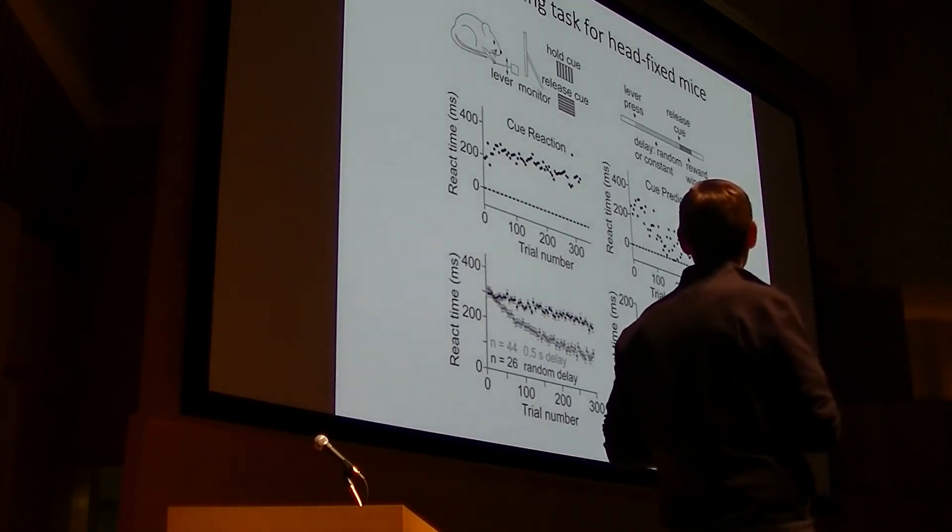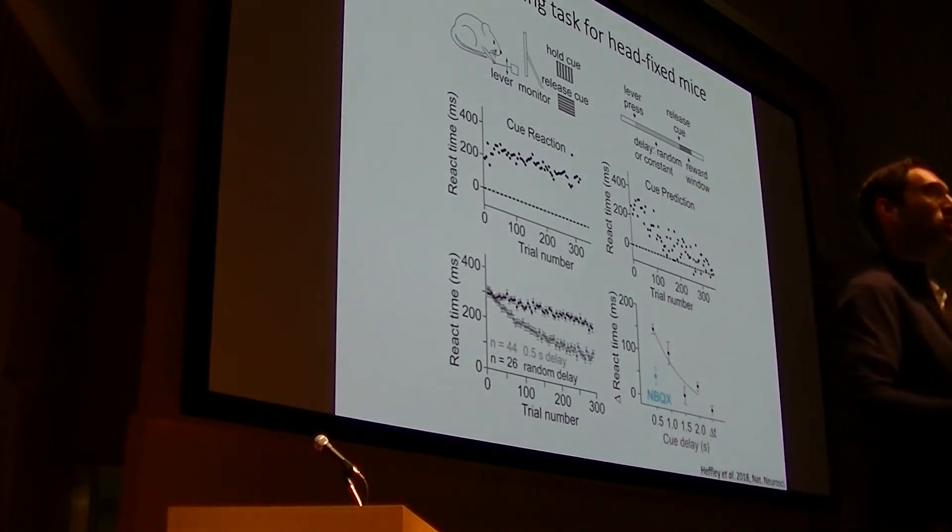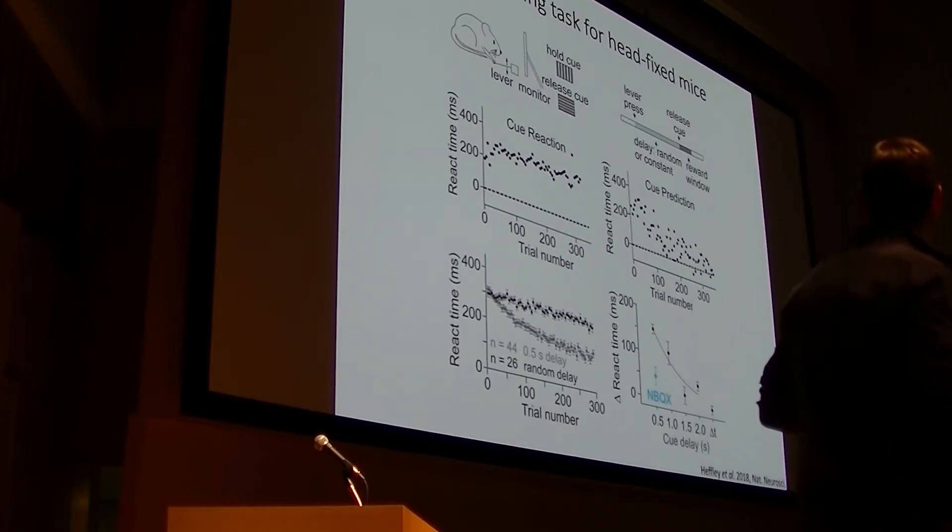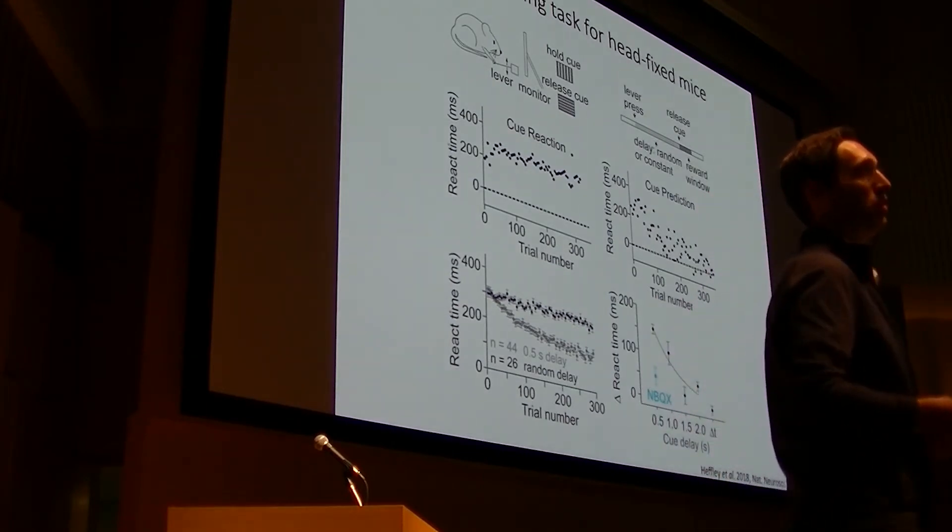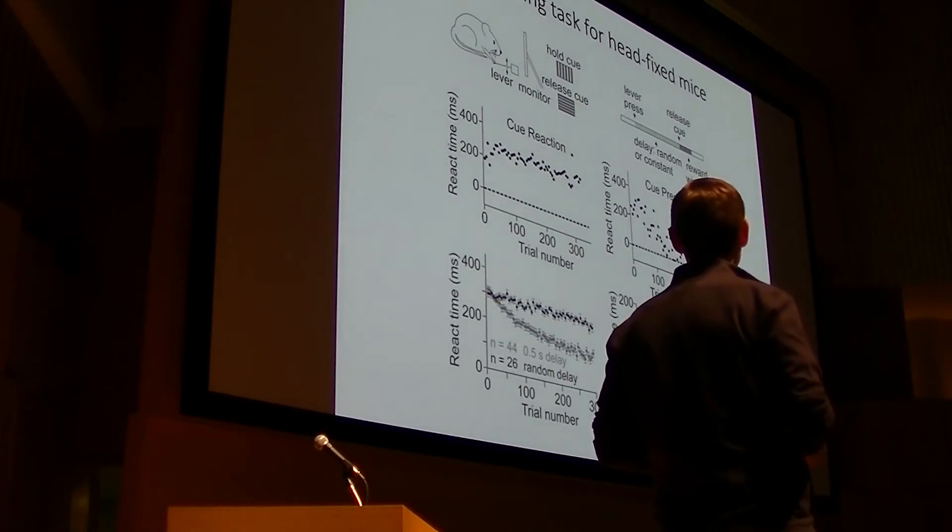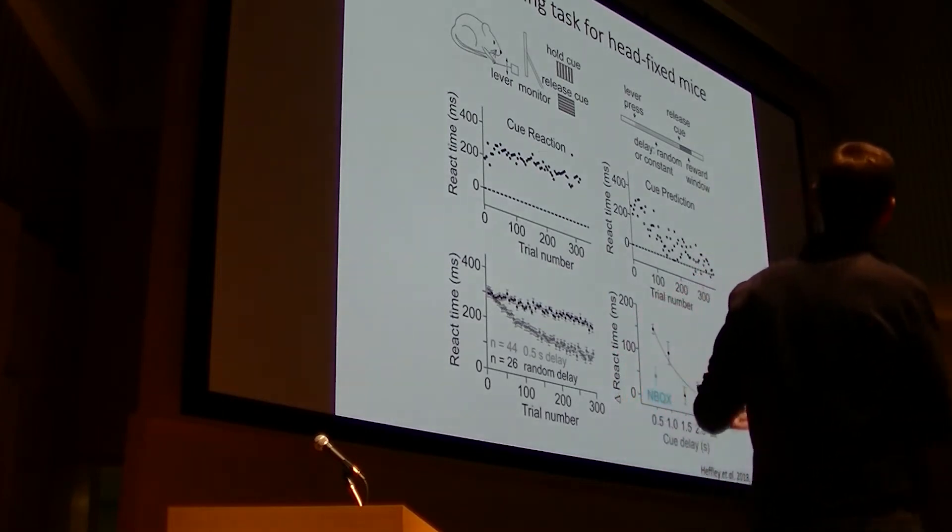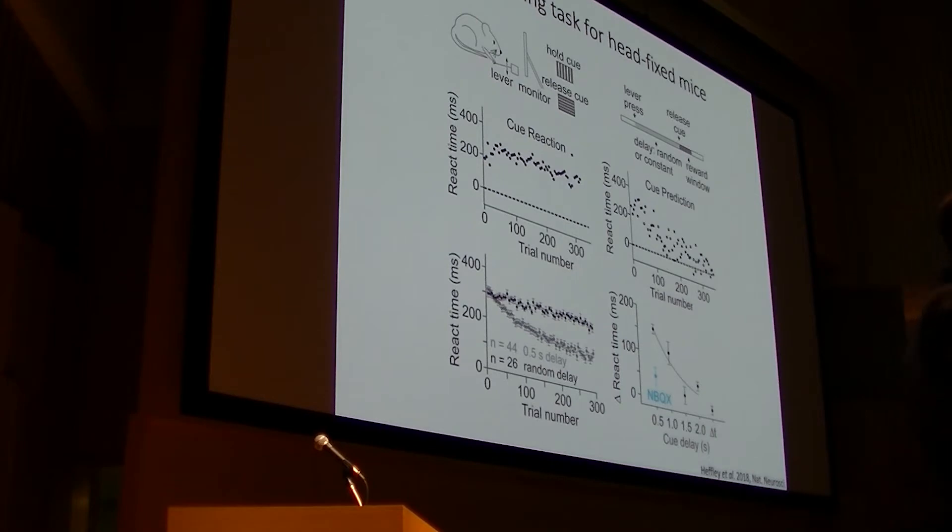The better evidence comes from this experiment where we infused synaptic transmission blockers into a very specific region of the cerebellum, which I'll show you momentarily. When we did this, we were able to impair learning on our task without impairing the animal's ability to manipulate the lever. So this task gives us two versions. One in which we can study the neural activity that is available to drive learning without allowing learning to occur. And then in the second version of the task, we can study how the neural signals in the cerebellum change as a function of learning.